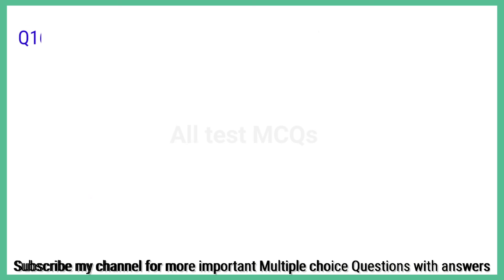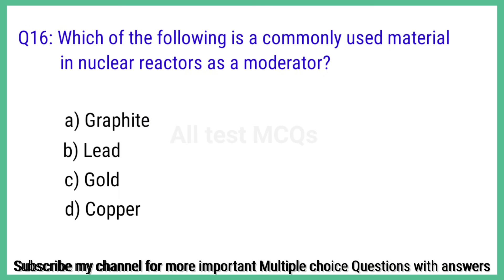Question number 16. Which of the following materials is commonly used in a nuclear reactor as a moderator? The right answer is option A: Graphite.